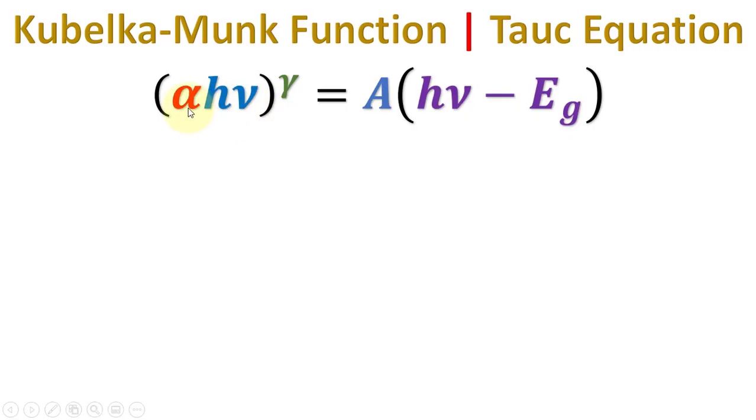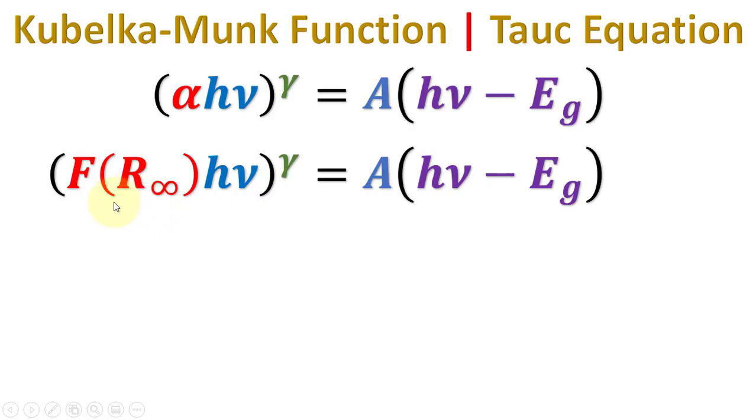This is the Tauc equation where alpha is the absorption coefficient. For the DRS data, we will replace alpha with the Kubelka-Munk function F.